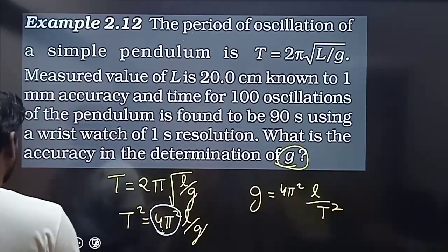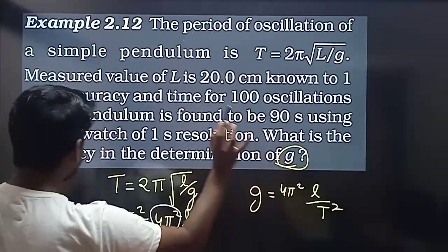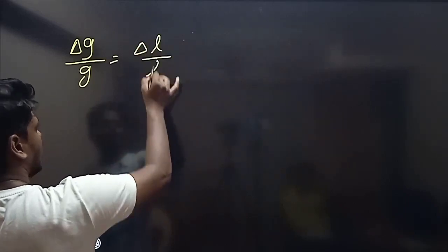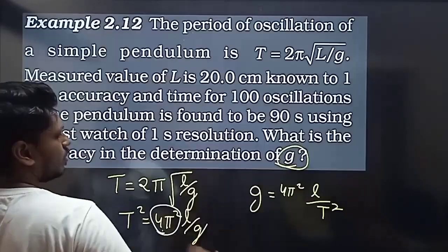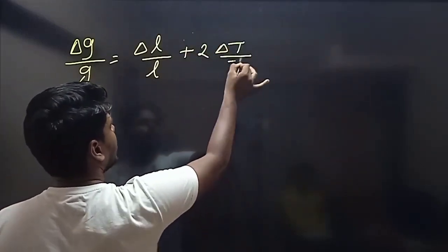What is Δg by g? Δg by g equals ΔL by L plus 2 times ΔT by T.